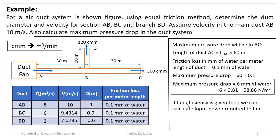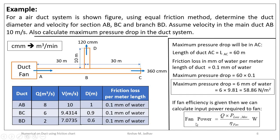Further, if fan efficiency is given, we can calculate the input power required for the fan using the formula: Fan power equals volume flow rate Q in cubic meters per second multiplied by maximum pressure loss in N/m², divided by fan efficiency. This gives fan power in Watts.